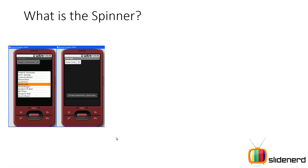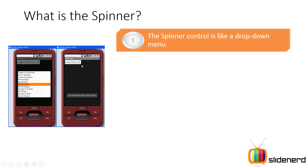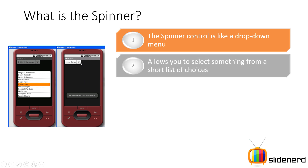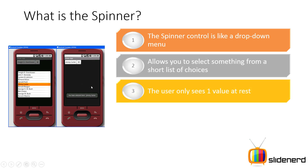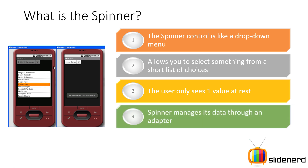The spinner exists in two states. On the right hand side, as you notice, the spinner is undisturbed. But when the user clicks on the arrow, he sees a list of all the available options and he can pick one of the options from those choices.